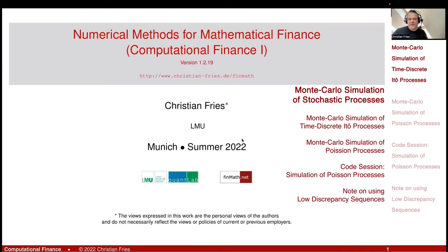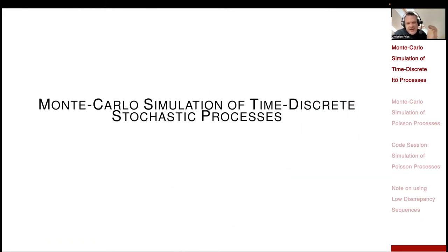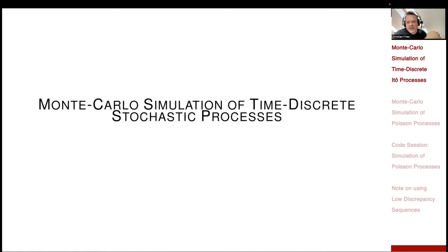Welcome to numerical methods for mathematical finance. In our last session, we somewhat finished our discussion on random number generation. The next session will be stochastic processes — specifically, time discretization of stochastic processes. We will look at time discretization because I would then like to apply the Monte Carlo method to stochastic processes. Before going to time discretization, I can discuss the Monte Carlo method in the context of time-discrete stochastic processes.